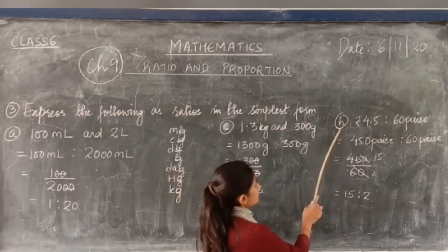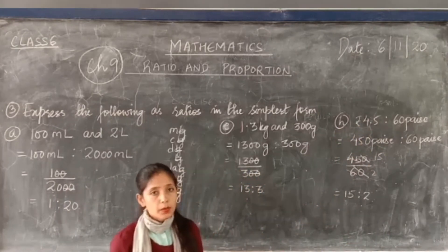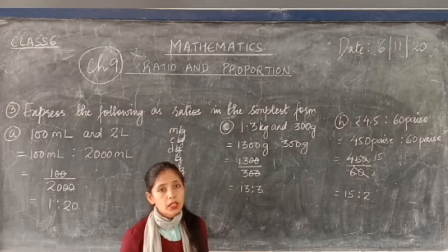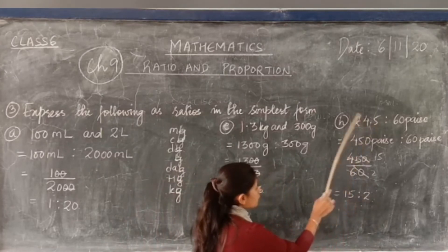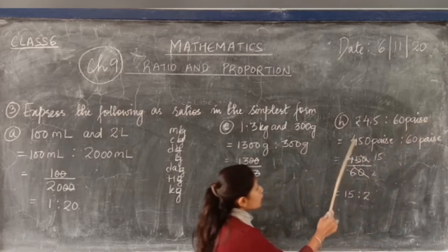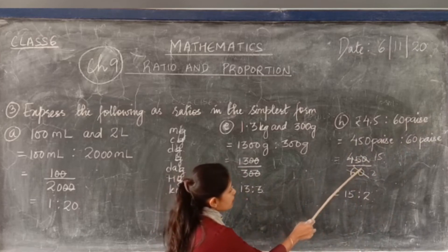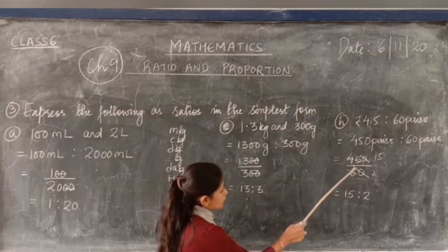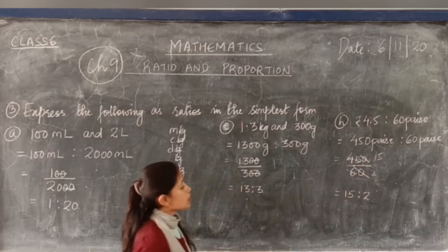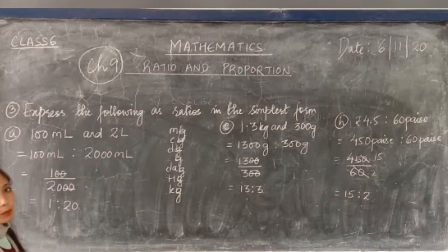Next is Rupees 4.50 and 60 paise. We know in 1 rupee there are 100 paise, so in 4.50 rupees there are 450 paise. Write 450 paise is to 60 paise, remove paise, write 450 divided by 60. Cancel the zeros, then cancel with 3 — 3 fifteens are 45, 3 twos are 6 — so the answer is 15 is to 2. Similarly, solve the remaining parts of question 3.